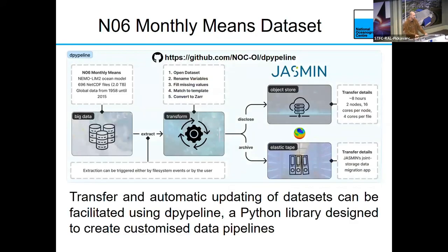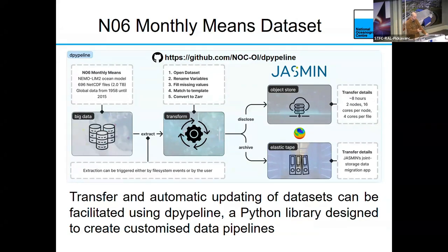Having decided to use Zarr and knowing our chunking strategy, the third challenge was how to automatically update these datasets on the object store. For this purpose we developed a pipeline — a Python library designed to create bespoke data pipelines. It is a general, customizable, and extendable software that can automate the extraction, transformation, and loading of datasets, and it integrates with parallel libraries. To transfer two terabytes of data to the JASMINE object store, it took approximately eight hours using two nodes, 16 cores per node, and four cores per file. The transfer scheme is very similar to the near-line approach that was presented earlier today.